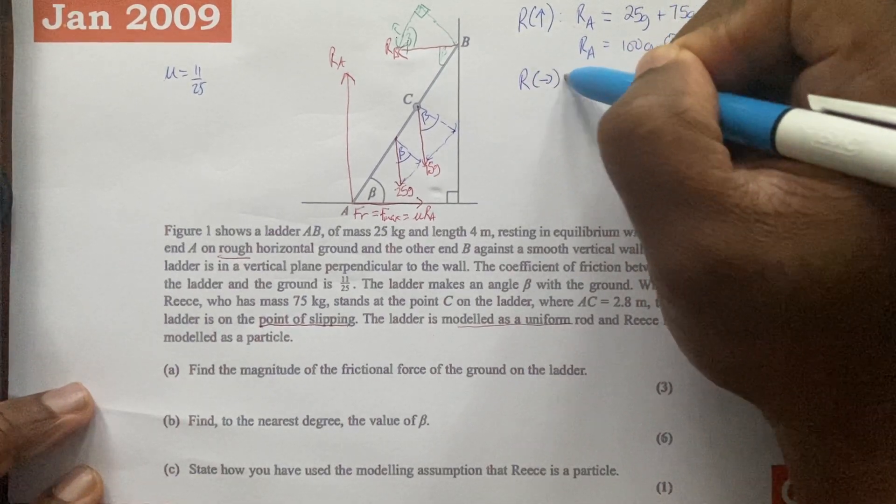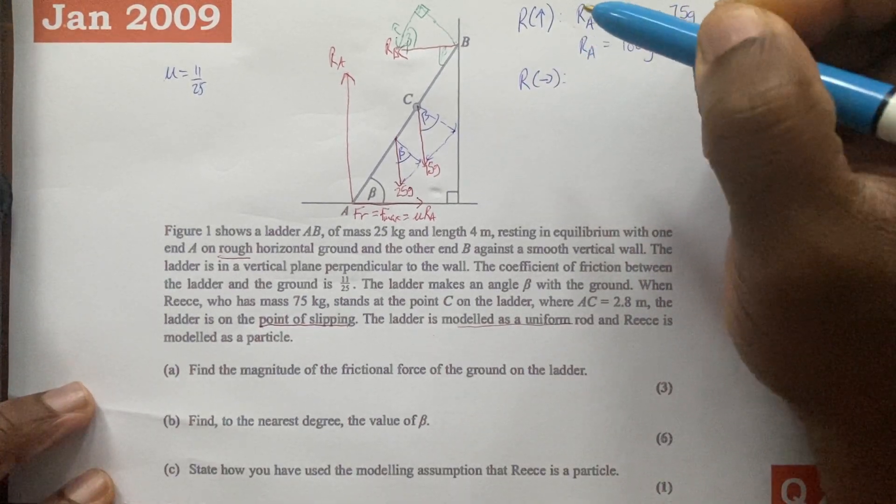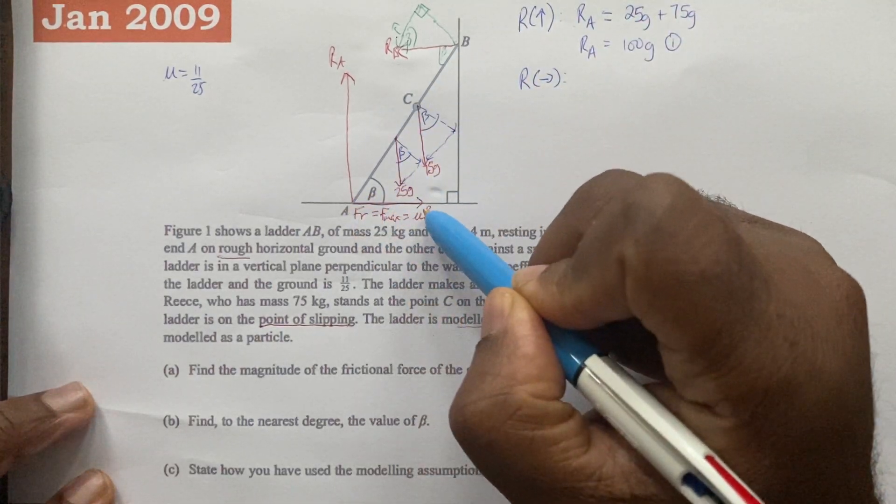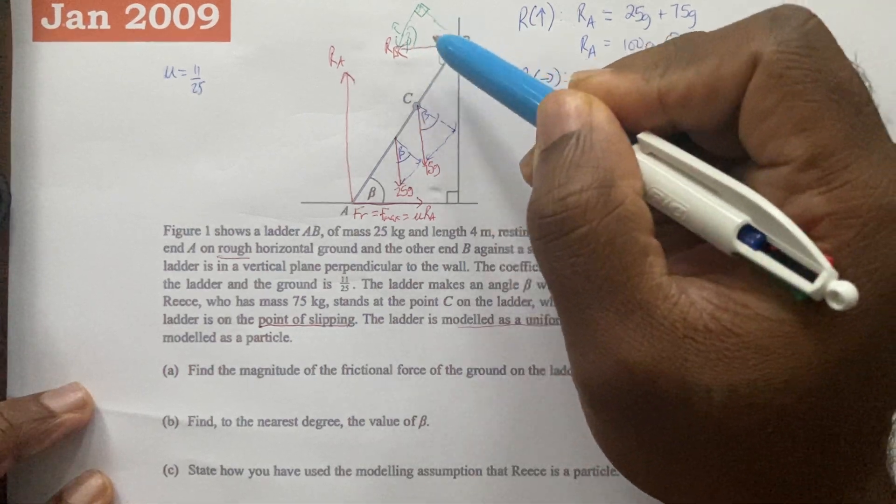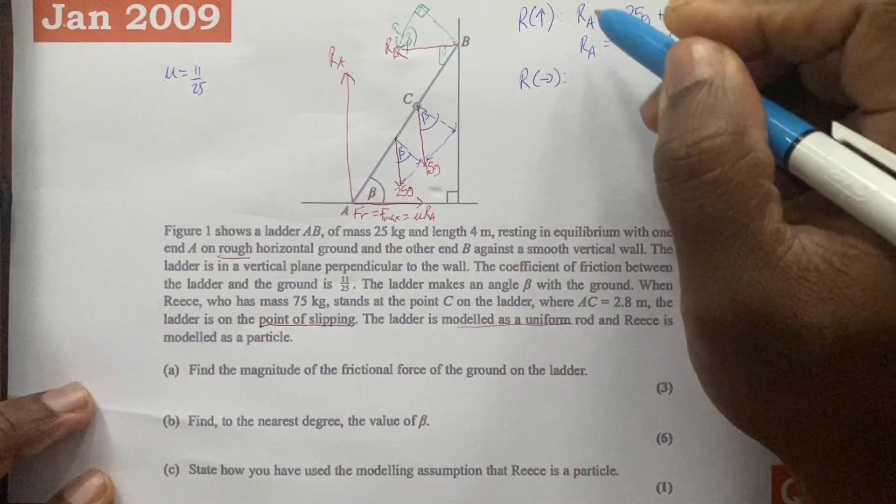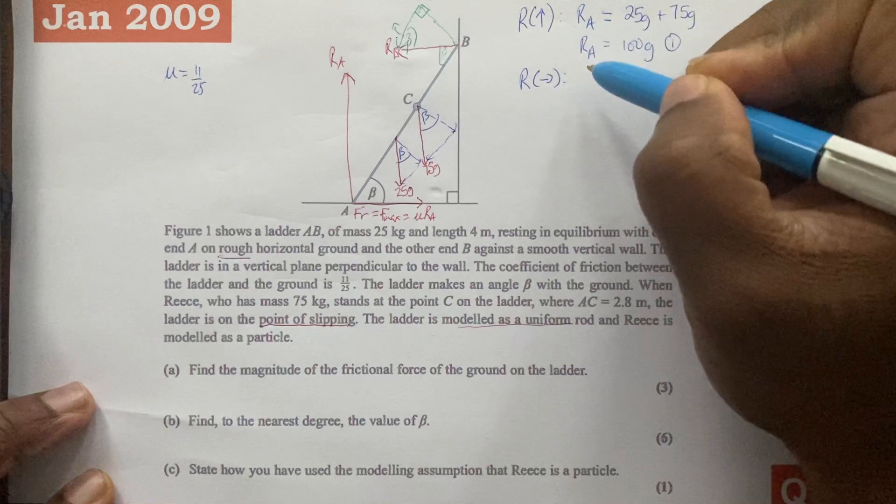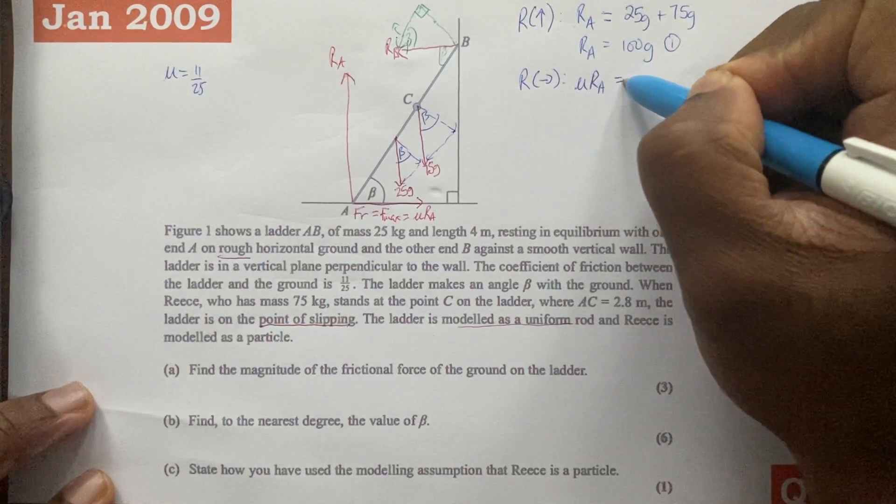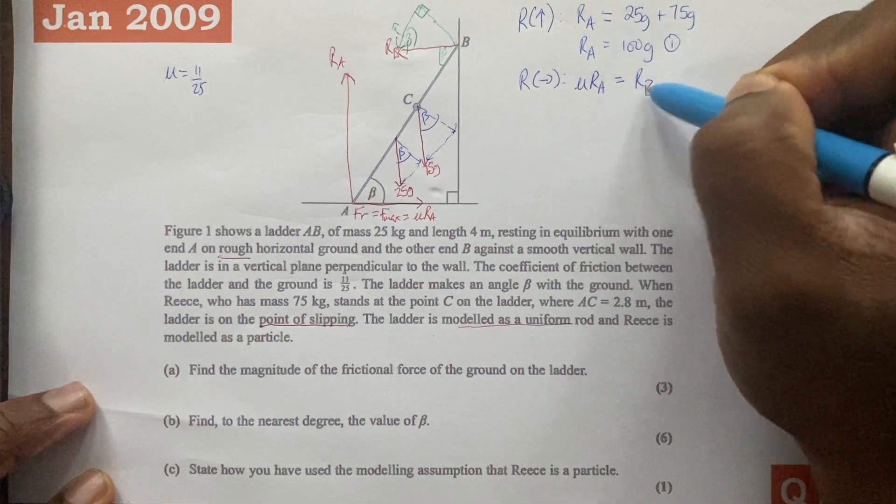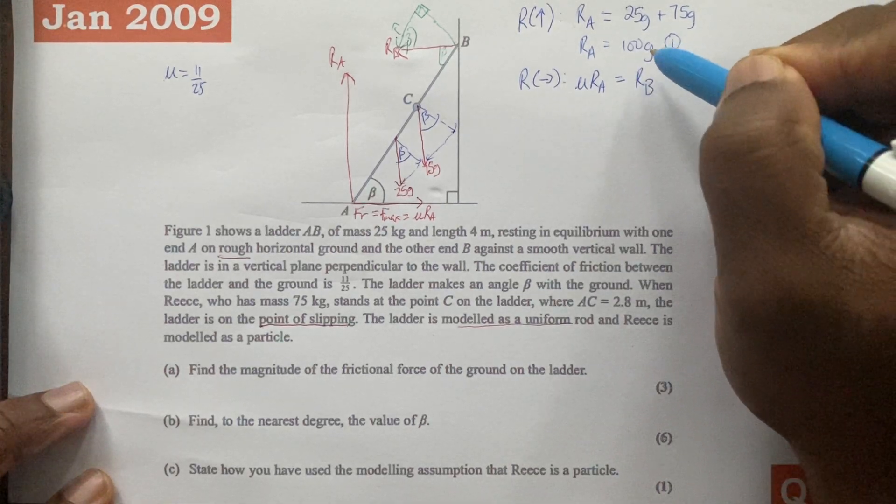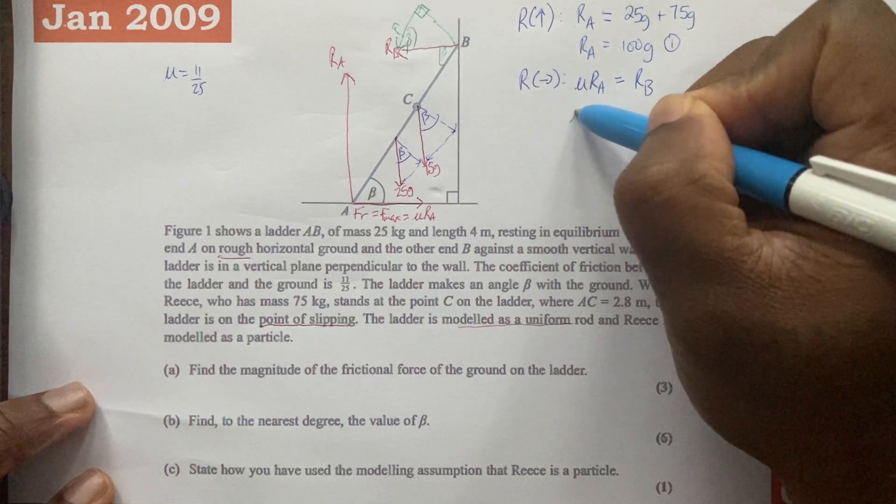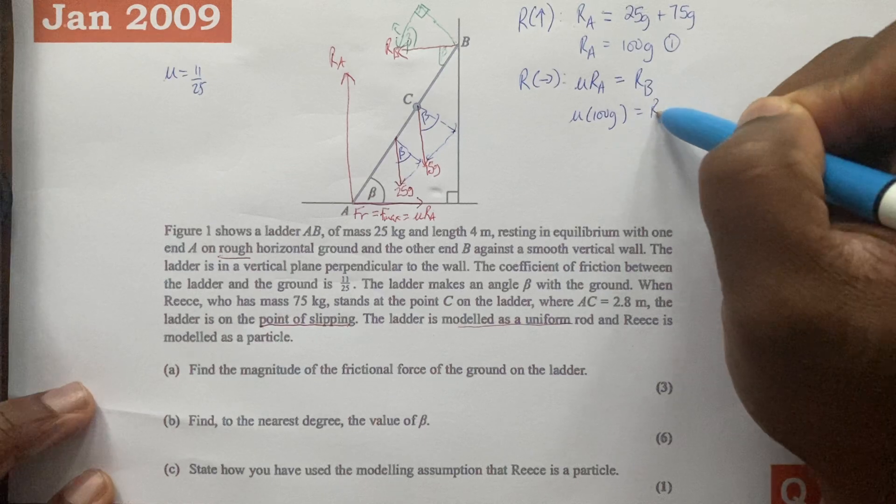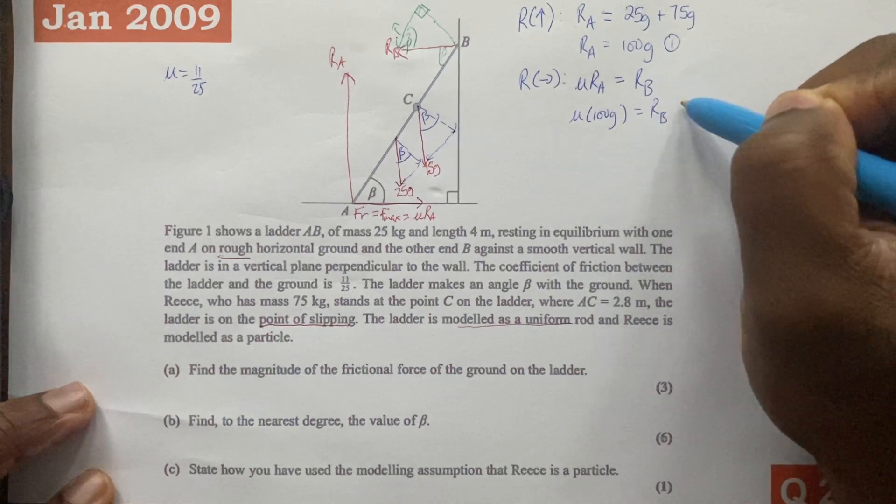Equation two is when we resolve horizontally. The forces acting to the right horizontally sum and equal the forces acting to the left horizontally. In other words, friction, which is the same as maximum friction, which is the same as mu RA, is equal to RB. From equation one, RA is 100G, so this would be mu times 100G is equal to RB, and we can call that equation two.